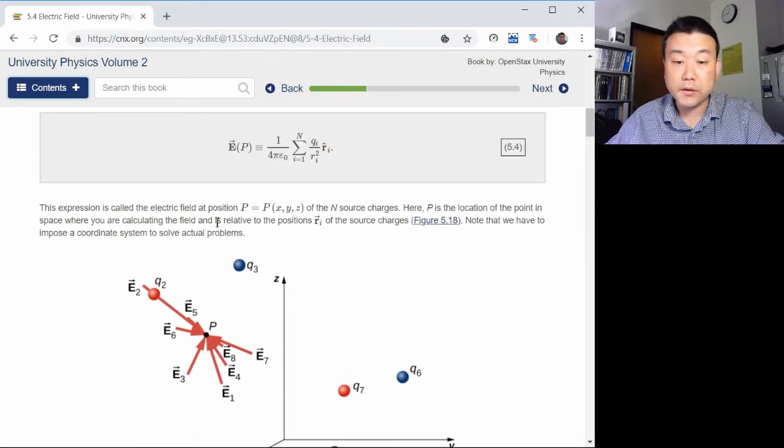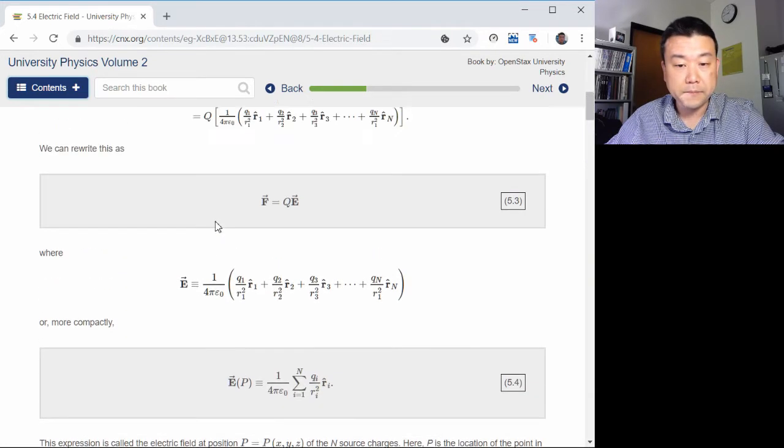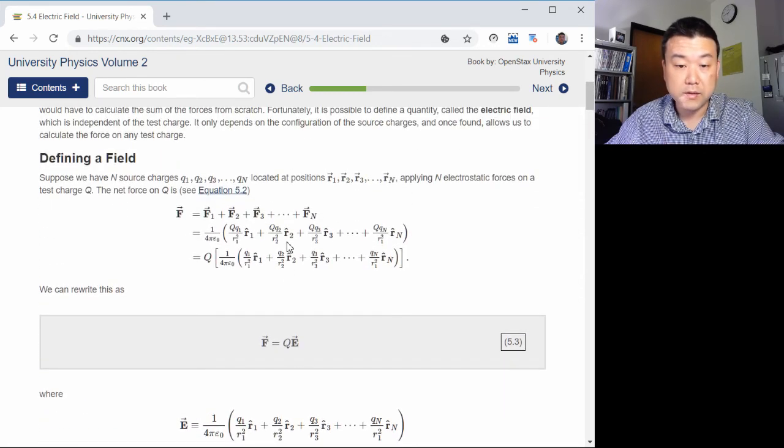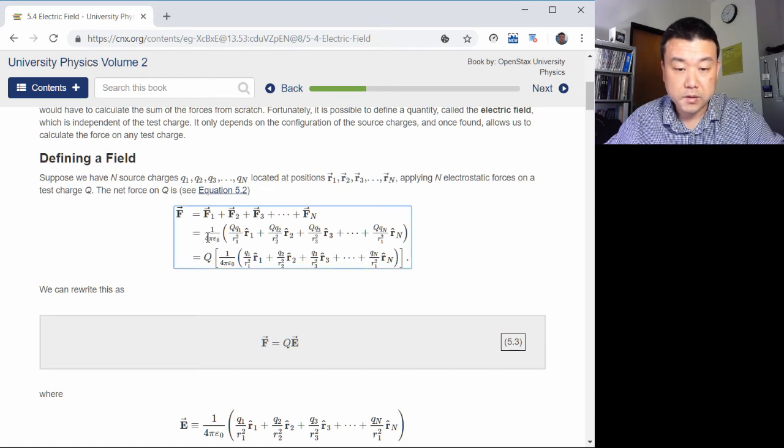And this is why electric field is defined this way. It's defined by use of this equation that electric force on a charge Q is electric field at the location that the charge is at times the charge Q. Or, looking back at Coulomb's law, you can think of it like, So, each one of these describes the force on charge Q.